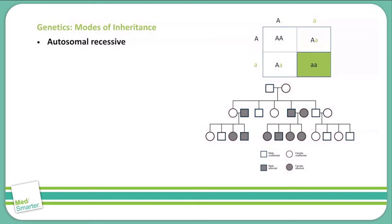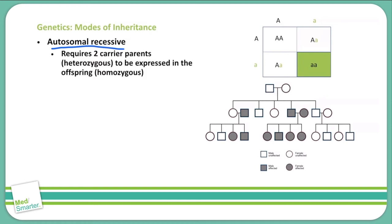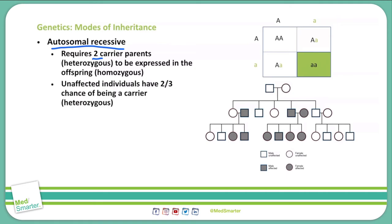Next, we're going to talk about autosomal recessive. Autosomal recessive is a trait that is only shown in the phenotype when both genes are present. You've got to have two carrier parents that are heterozygous to be expressed in the offspring. Someone that carries a recessive trait will not express that trait unless both alleles are recessive. Unaffected individuals have a two-thirds chance of being a carrier from a heterozygous parent.